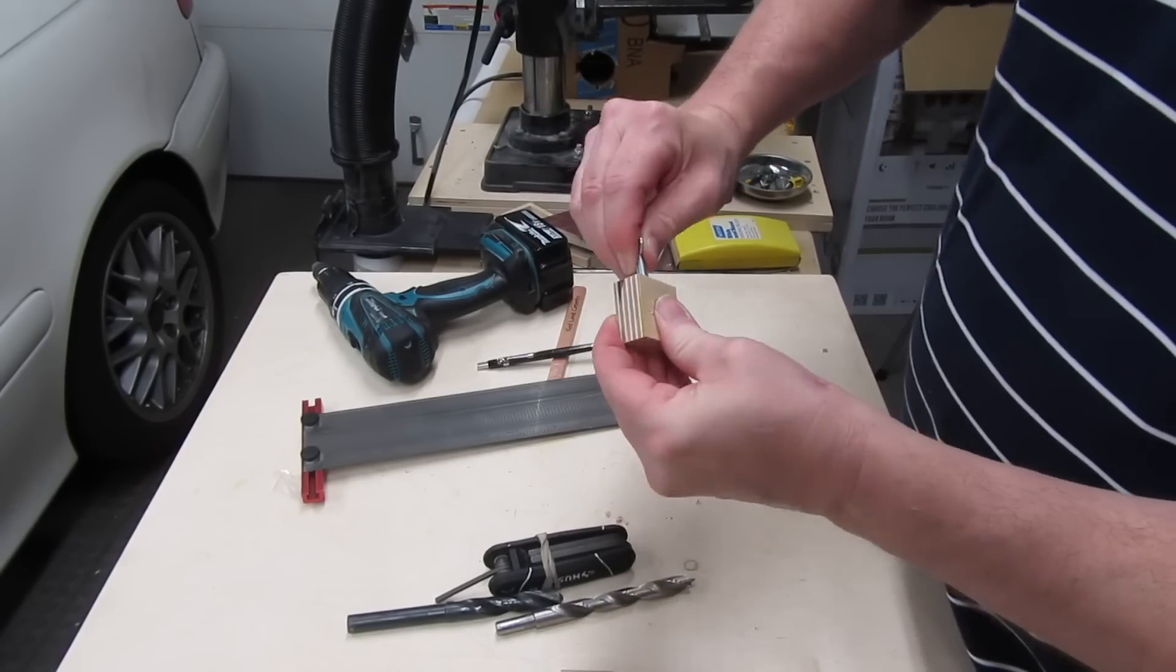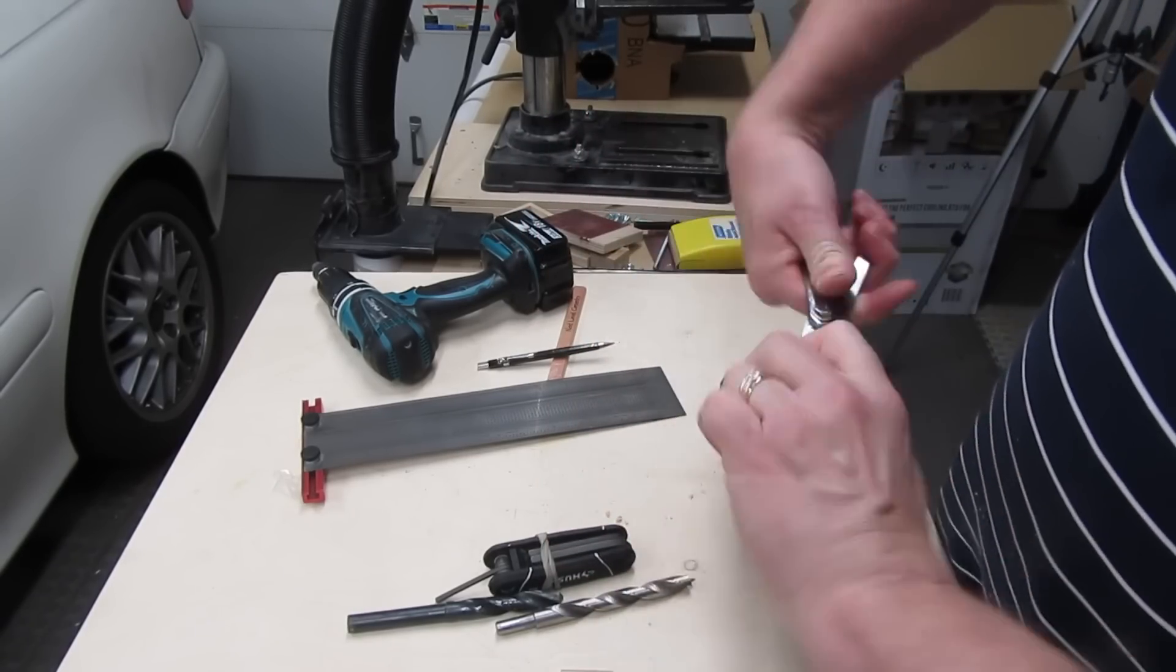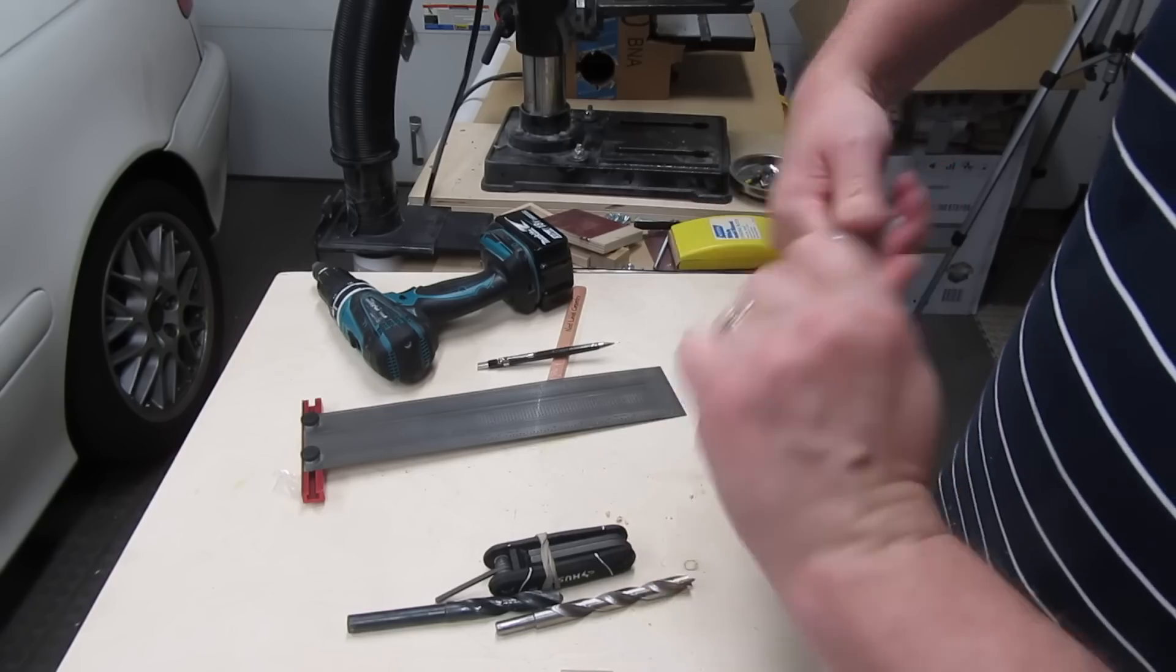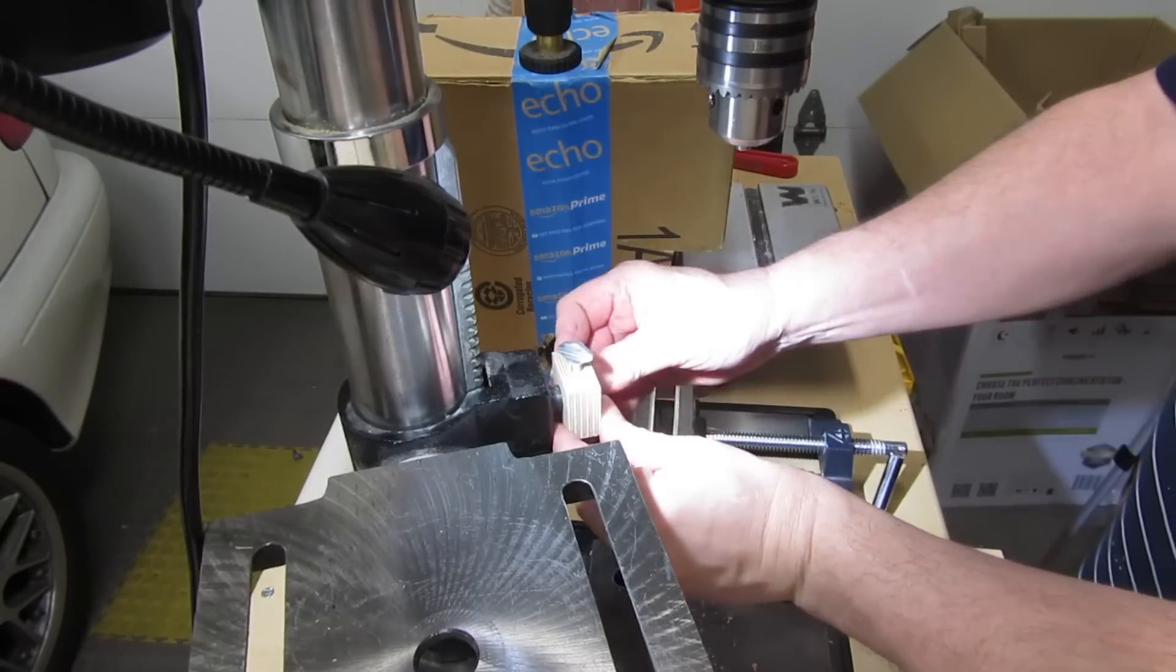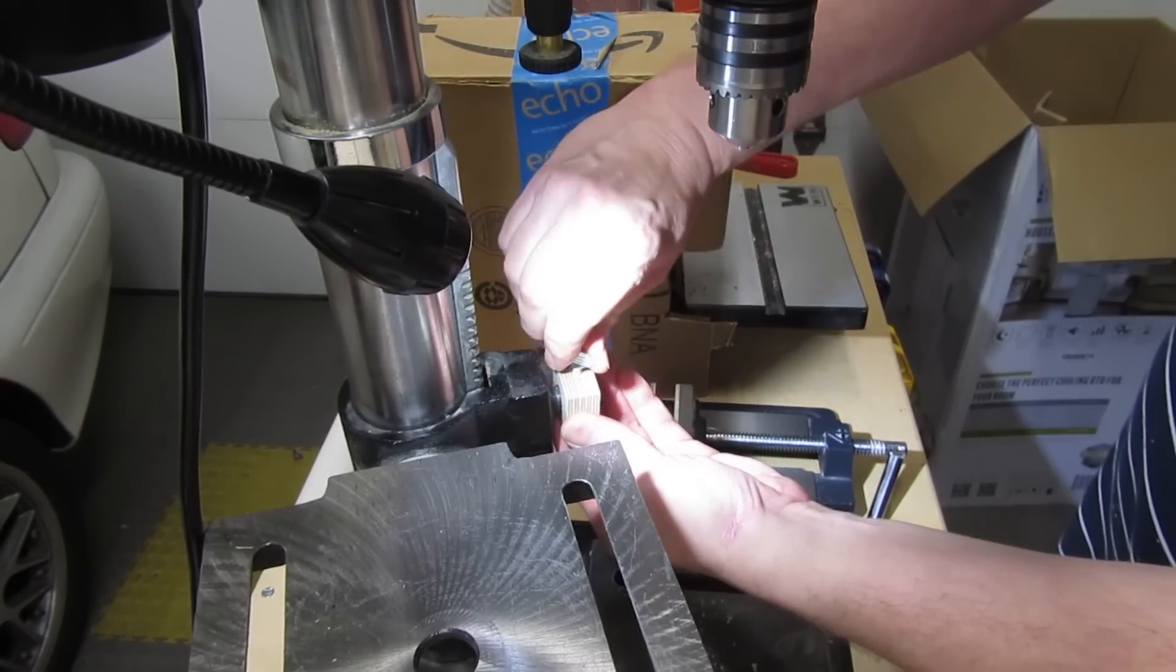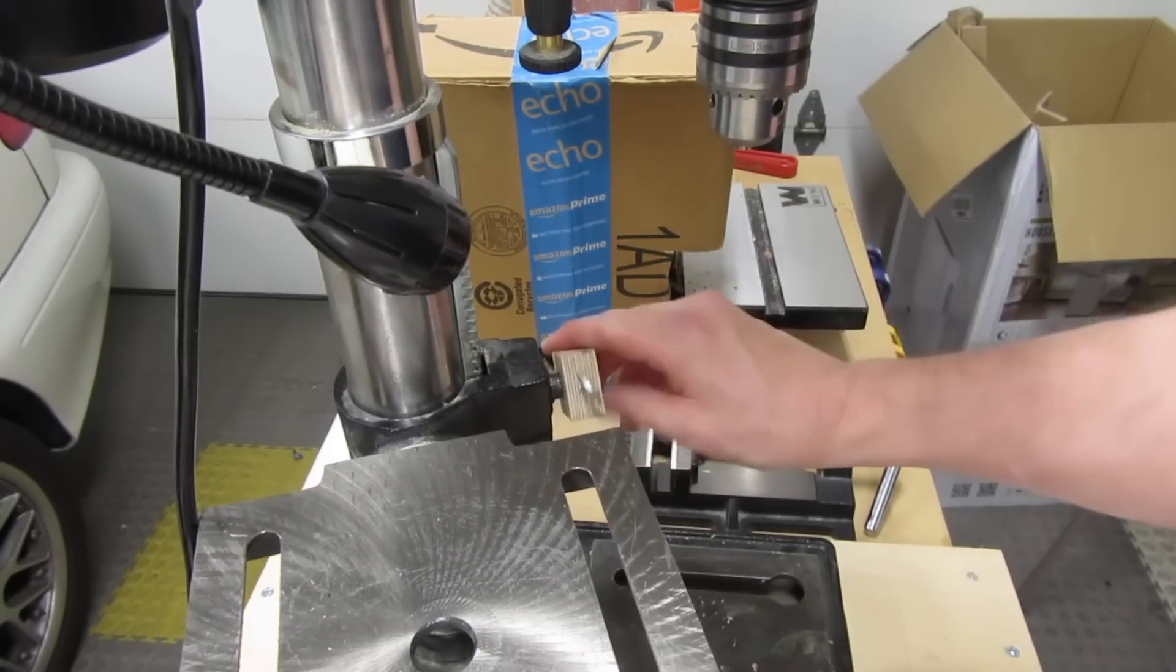Then I pressed the thumb screw into the hole and twisted it, and eventually it made its own threads. After working it in and out a few times, it was just about right. Tight enough to not loosen on its own, but not too tight. It fits on the crankshaft perfectly. And when I tighten down the thumb screw and turn the block, it raises or lowers the table just like I wanted.